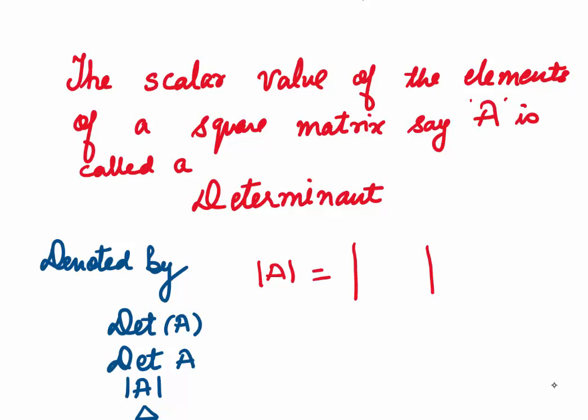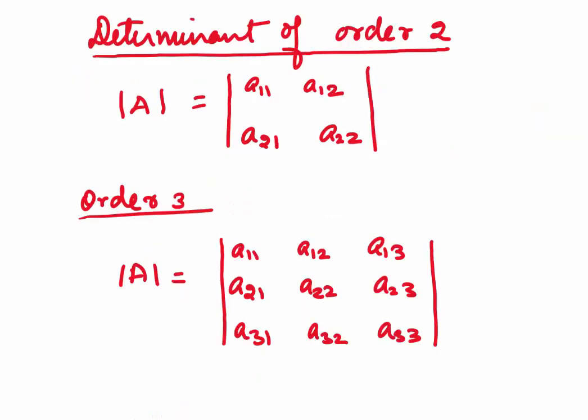There are different ways of denoting it. We either write it as determinant in brackets A for the matrix A, where DET is short for determinants, or we will just write DET A for determinant A. We can also write it as A surrounded by two bars or the sign of delta. A determinant of order 2 has the form A11, A12, A21, A22 — it will have two rows and two columns.